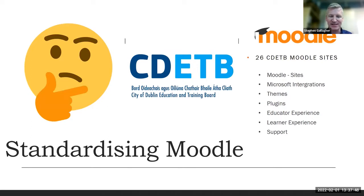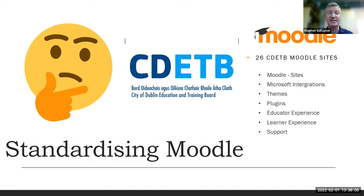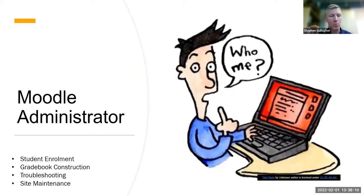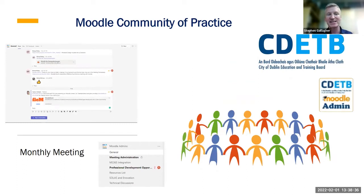How do we standardize Moodle? We have 26 sites and we want the same integrations — we don't want them to look the same, but to do the same things: themes, plugins. The key thing is educator and learner experience, that they have a good experience in Moodle. Moodle administrators are on the ground in our colleges — they might only have two or three hours off to do all this work: student enrollment, grade book construction, looking at plugins. If one college got a plugin, the other colleges would never hear about it. So we developed a community of practice around Moodle, coming together with one hour meetings every month to talk about all the successes and failures in relation to Moodle.